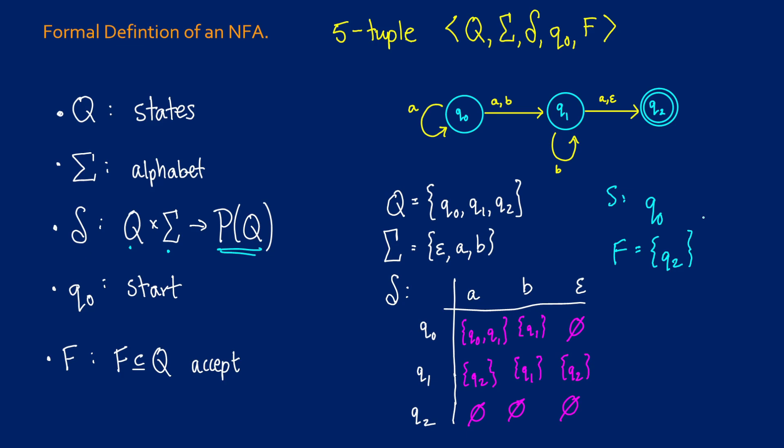Our start state is q0, and the set of final states F = {q2} since that's the only accept state. In future videos we'll show that NFAs and DFAs are equivalent, take a look at regular languages, and then show how to connect those with NFAs.